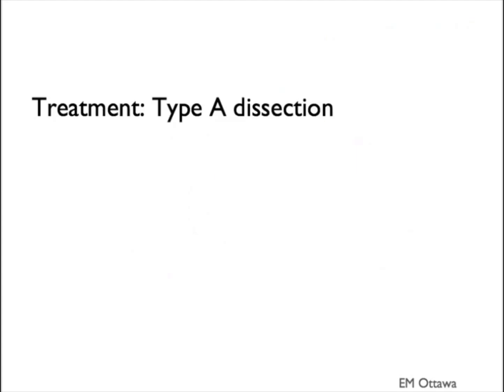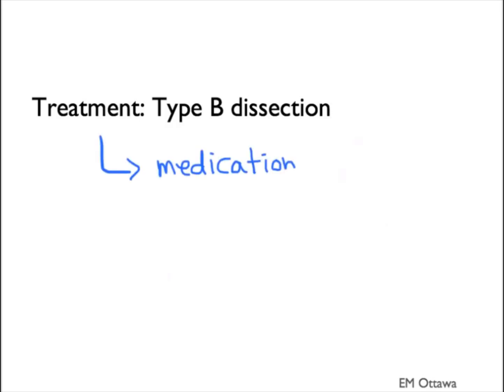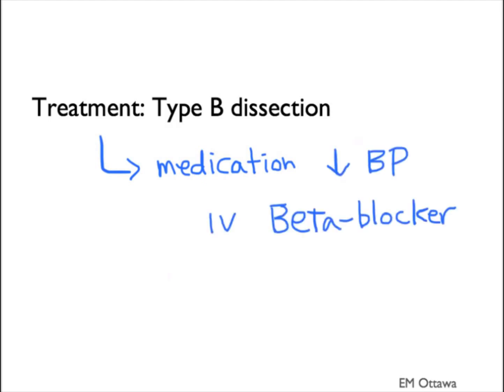Type A dissection is the more worrisome kind since it can easily go into the pericardium and into the coronary arteries. The treatment is surgical. Type B dissection is treated usually just with medications alone. The medication aims to decrease blood pressure and usually consists of IV beta blockers. Sometimes the surgeons are involved, depending on the institution.